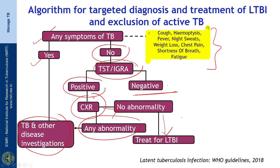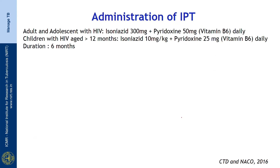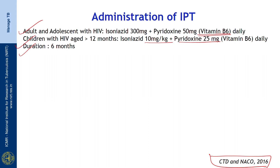Regarding the administration of isoniazid preventive therapy according to the Central TB Division and NACCO guidelines: adolescents and adults with HIV should be given isoniazid 300 mg plus pyridoxine 50 mg (vitamin B6, to reduce peripheral neuropathy) daily. Children with HIV aged more than 12 months should be given isoniazid at a dosage of 10 mg/kg along with pyridoxine 25 mg daily, and the duration of IPT is 6 months.